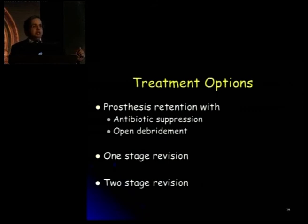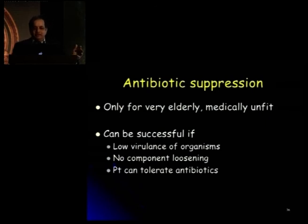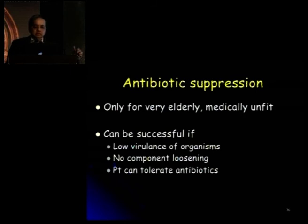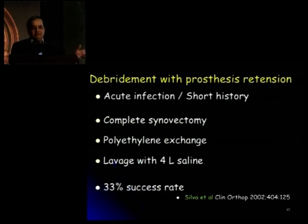Treatment options, once you establish infection, include: first, prosthetic retention with antibiotic suppression and/or open debridement; and otherwise, one-stage or two-stage revision. Antibiotic suppression alone is advised only for very elderly, medically unfit patients, and can be successful only if the organism is of low virulence and components are not loose. Debridement with prosthetic retention can be done if the history is very short and it's an acute infection — if you go in before the biofilm develops, within that small window of about 5 to 10 days. If delayed, the biofilm develops and debridement alone without removing the prosthesis doesn't work.